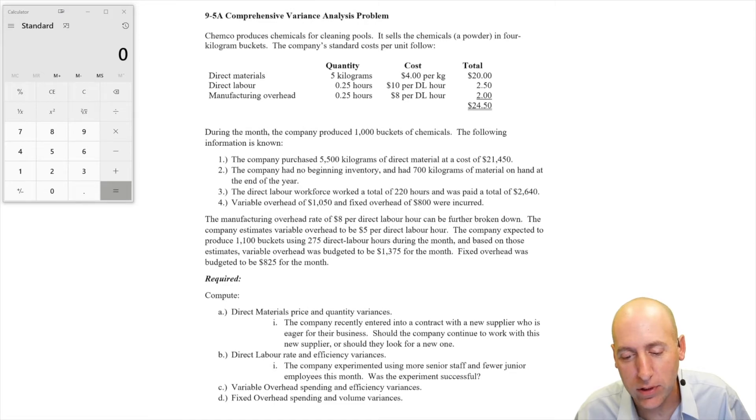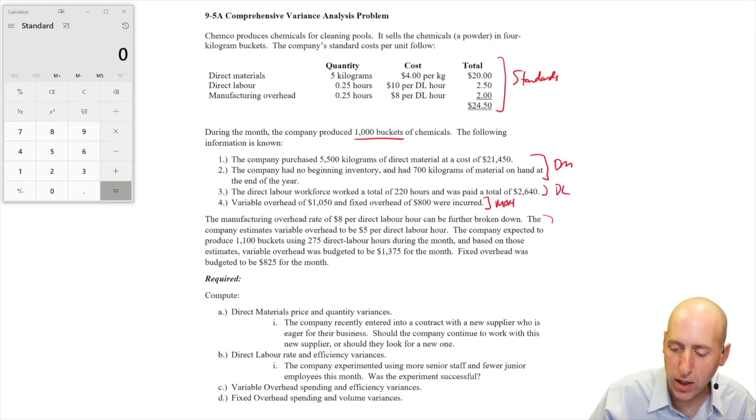Chemco produces chemicals for cleaning pools. It sells the chemicals, a powder, in four kilogram buckets. The company's standard costs per unit follow, with material, labor, and overhead - these are all standards. When I'm looking for SQ and SP and those types of things, this is where I will look. During the month, the company produced 1000 buckets - that's the actual output. And the following information is known, with some actual information about materials, labor, and overhead, both variable and fixed. Let's do the material and labor variances first.